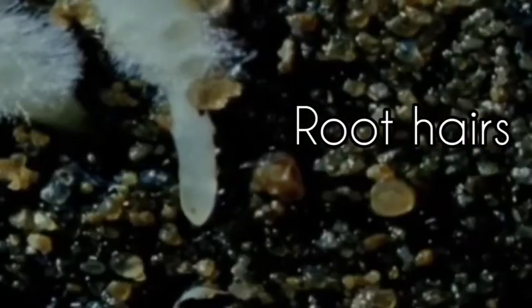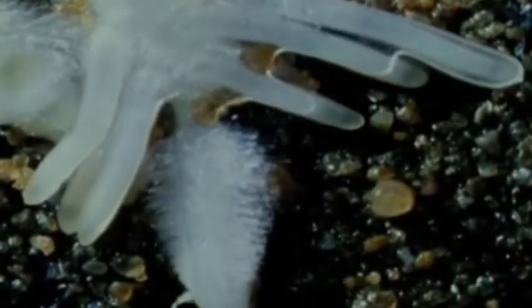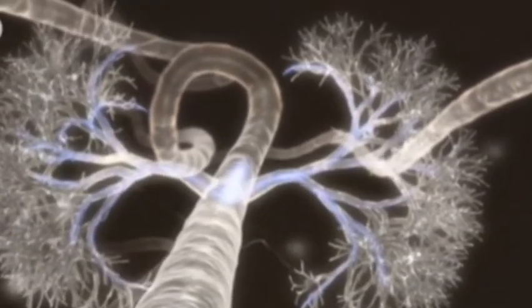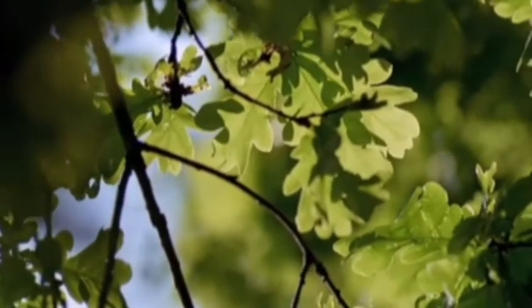This absorbed water needs to be taken to the leaves because leaves need water to make food glucose. The water absorbed by the root is taken through the stem to the leaf through tubular cells called xylem.